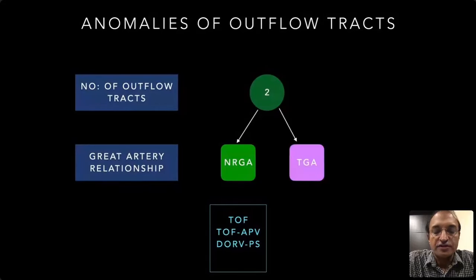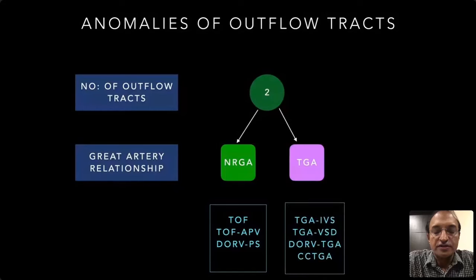If the outflow tracts are abnormally related — transposed — then you are dealing with TGA. You can have different types: TGA with intact septum, TGA with VSD, double outlet right ventricle with a TGA transposition-type relationship, or corrected transposition. So in summary: two outflow tracts normally related mostly fall into the tetralogy of Fallot group, while if transposed with the aorta anterior, it's the TGA group.